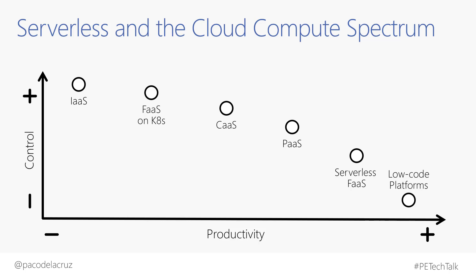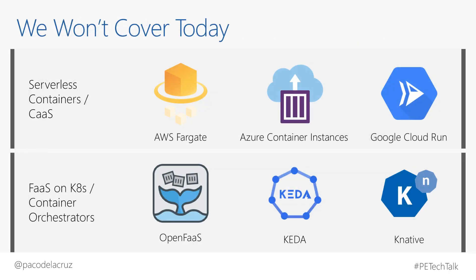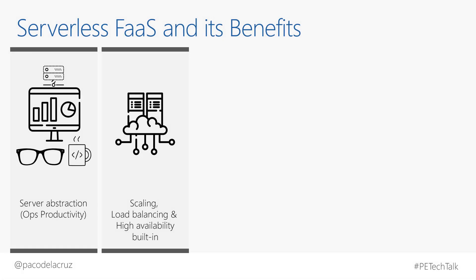There are other options too. To the left of platform as a service we have containers as a service, and there is also function as a service on top of container orchestrators or Kubernetes. There are also low-code platforms. Tonight we'll be focusing only on serverless functions as a service, meaning we won't cover serverless containers like AWS Fargate, Azure Container Instances, Google Cloud Run, or FaaS on orchestrators like OpenFaaS, Knative, or KEDA.